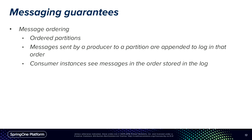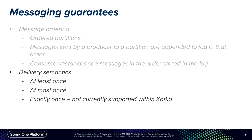The guarantees Kafka provides: message ordering is by partition, not by topic. All messages sent by a producer to a particular partition are appended in order, similar to JMS topic guarantees but per partition. Consumer instances see messages in the order stored in the log. For delivery semantics, by default you get at-least-once delivery — you may see duplicates but never lose a message. You can also implement at-most-once delivery, where you never get a duplicate but may lose messages. Exactly-once is not currently implemented in Kafka natively, though it can be implemented using external transactional systems.